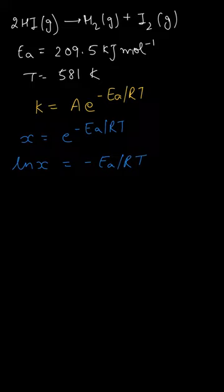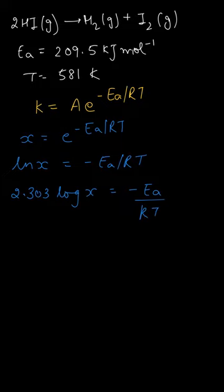Now we convert to log base 10, so that would be 2.303 log x equals minus Ea upon RT. From here, log x equals minus Ea divided by 2.303 RT.